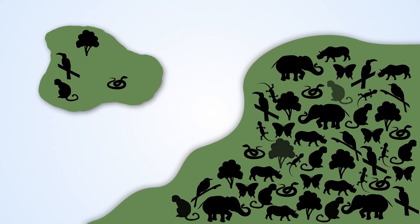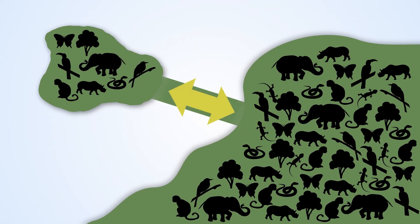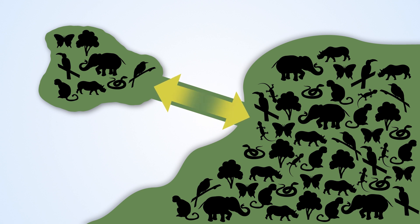Connectivity of forest patches helps animals, seeds and pollen to disperse, supporting the forest's ability to regenerate. Isolated forest patches are prone to degradation.